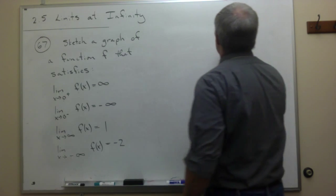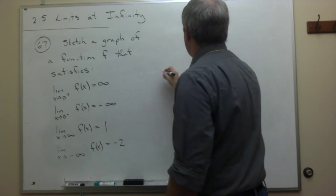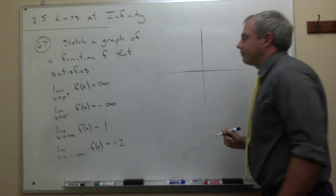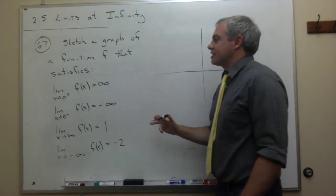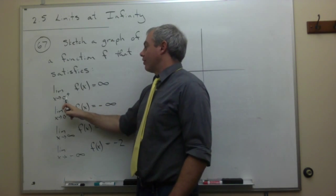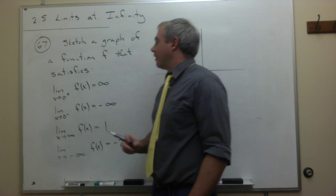Okay, so what I'm going to do is let's just start out. We'll draw a graph, and we know that some things happen as x goes to 0 from the right and as x goes to 0 from the left.